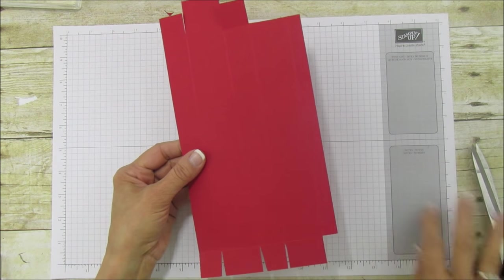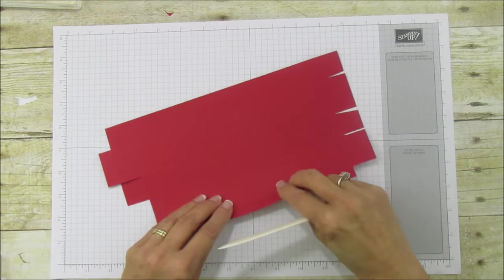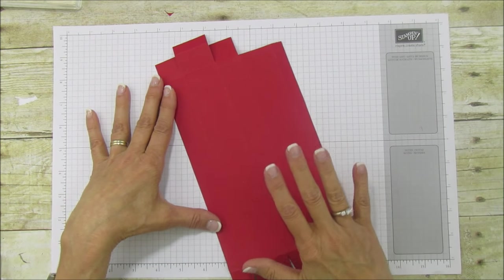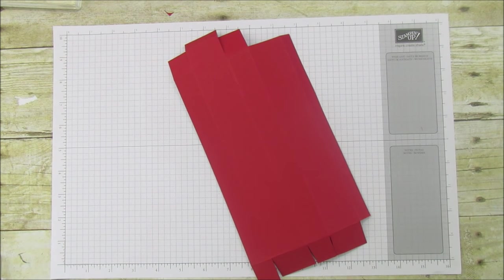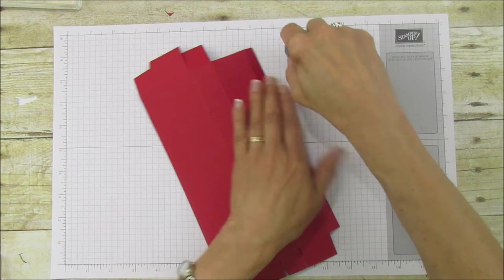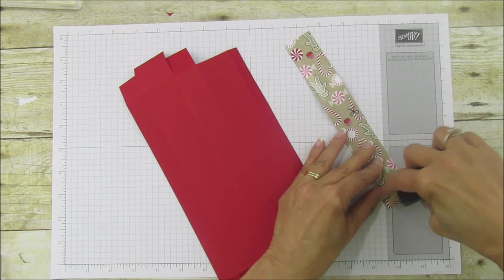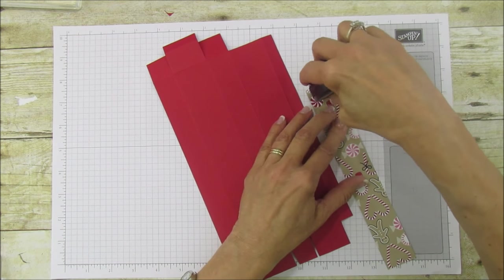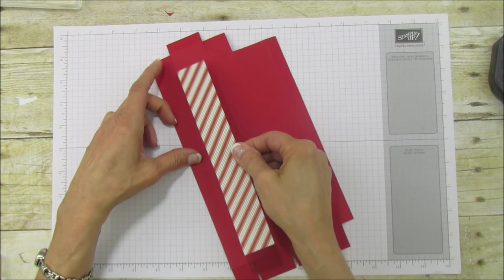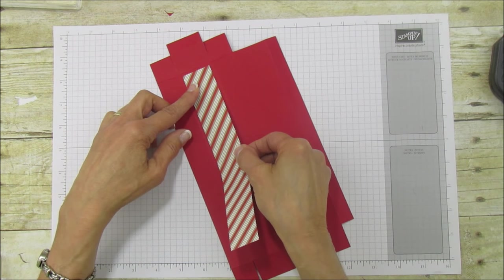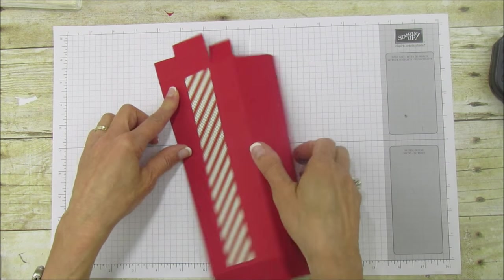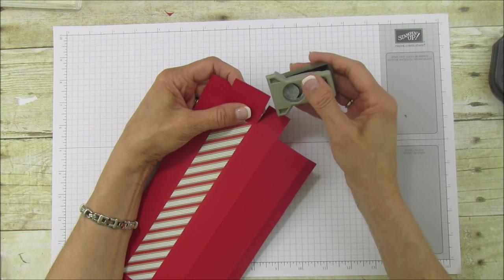This is what it looks like. Let me grab my bone folder and we'll sharpen all the score marks. Okay, so now we're ready to mat it and we want to mat it before we put our little window in it. I'll grab my fast fuse and we're going to mat the piece that has the little flap here, just center it.